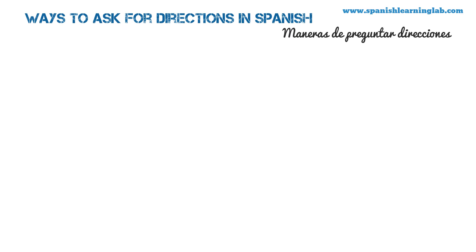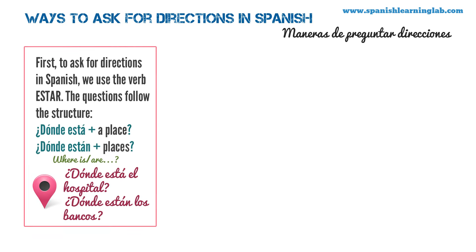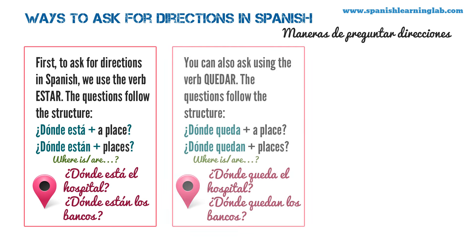Ways to ask for directions in Spanish. Formas de preguntar direcciones. To ask for directions in Spanish we often use the verb estar, to be in Spanish. The questions follow the structure: ¿Dónde está? plus a place, and ¿Dónde están? plus places. For example: ¿Dónde está el hospital? ¿Dónde están los bancos? ¿Dónde está? is very common, but you can also ask using the verb quedar.